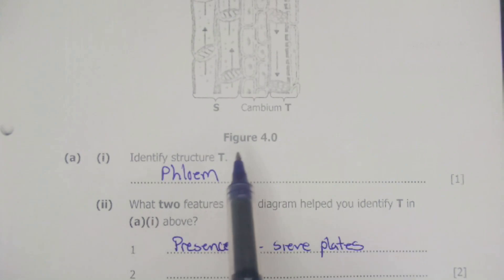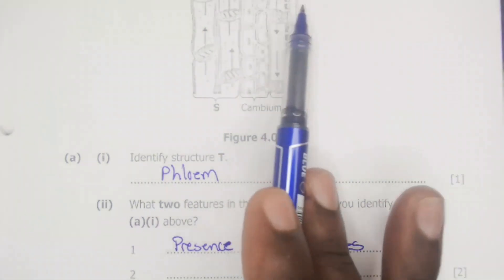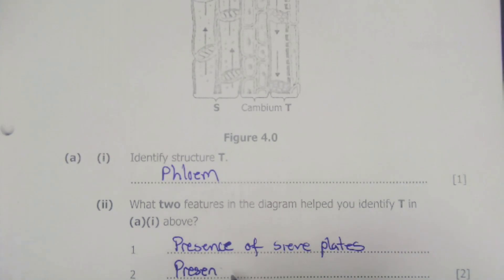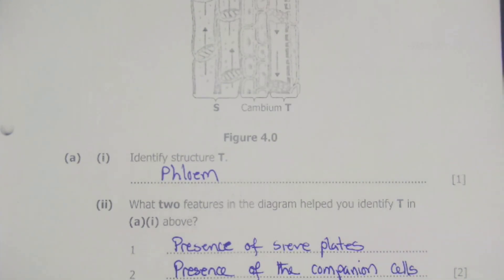Then the other feature is of course the cells which are joining to this structure. You can see that this is the companion cell. So we have presence of the companion cells. This is the solution to question number A2.